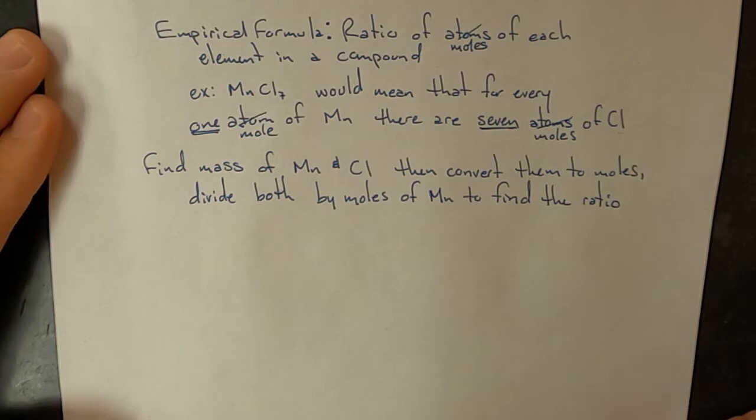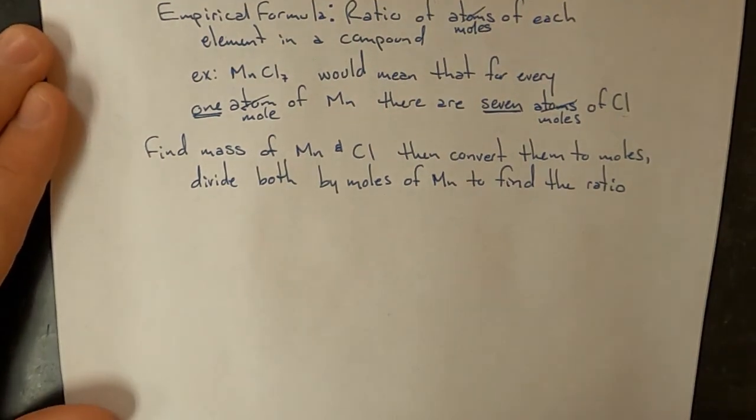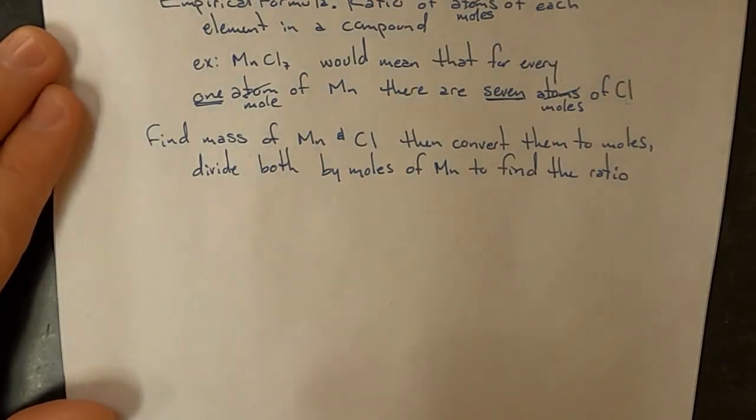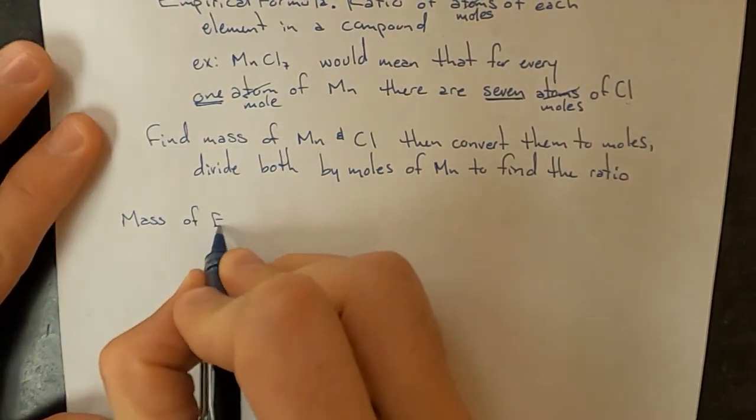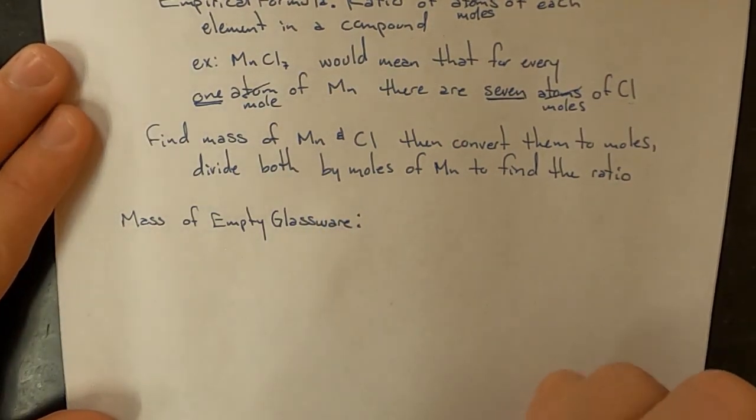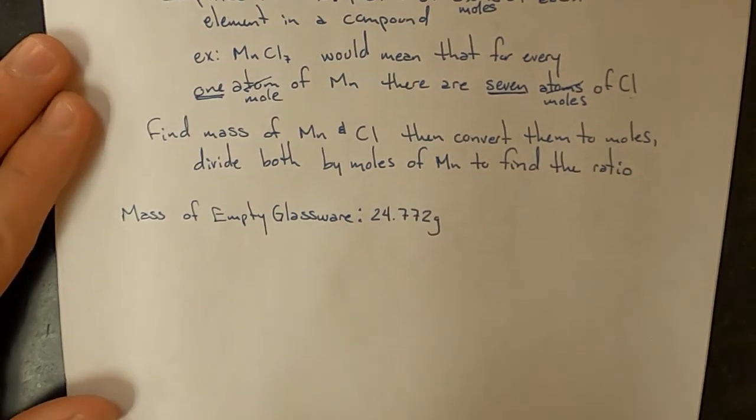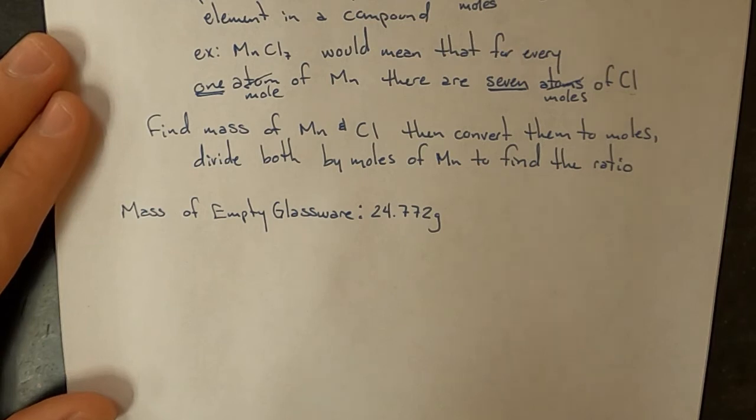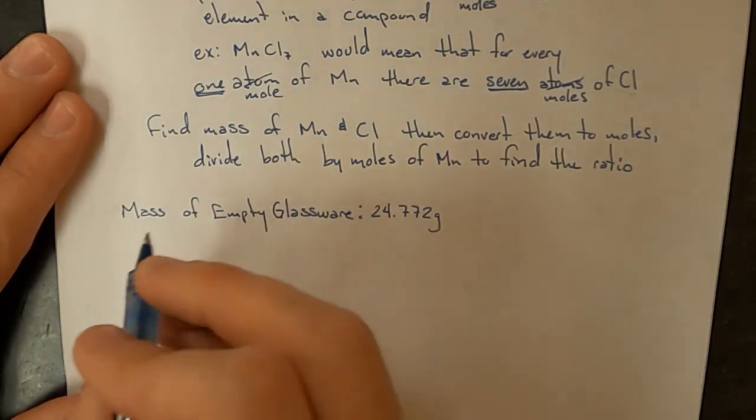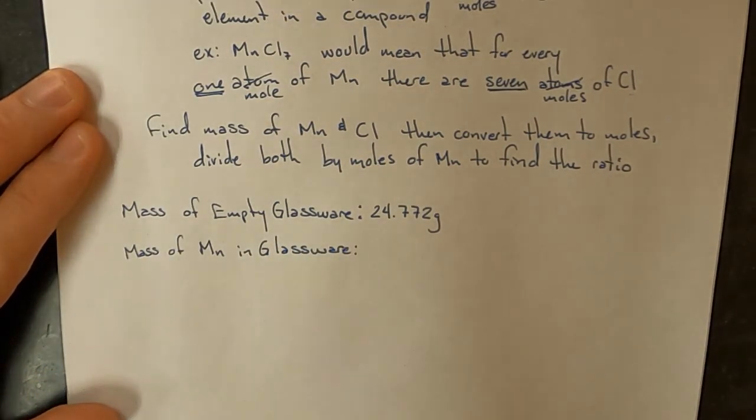And so there were really only three pieces of numerical data collected. The first was the mass of your empty glassware, and in the video, mine was 24.772 grams. Next, I put in some manganese, and I recorded the new mass of the glassware with the manganese, and I recorded a mass of 24.978 grams.